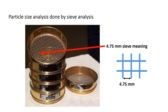Particle size analysis is done by sieve analysis using sieves. For example, a 4.75 mm sieve means the clear gap between the sieve wires is equal to 4.75 mm.